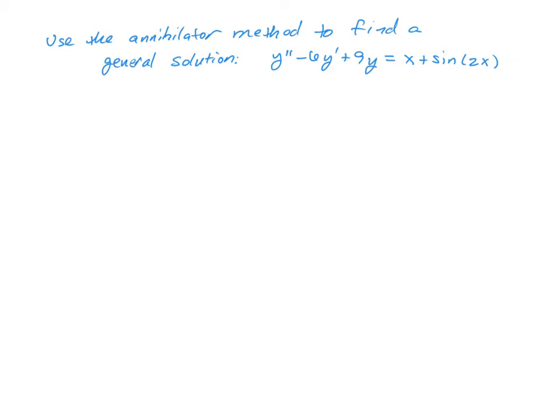Okay, so for this equation, we're going to use the annihilator method to solve it, and this is different than the undetermined coefficients and variation of parameters. Think of this as a third method for solving inhomogeneous second-order equations.